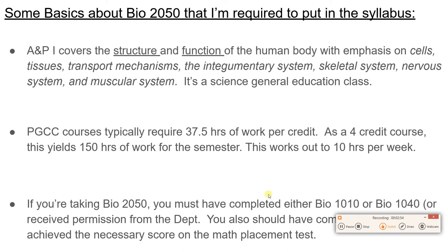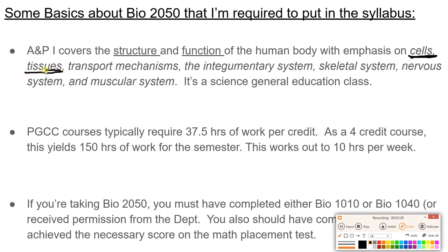There's some stuff about the class that the college makes me put in the syllabus. What we are going to do in A&P 1 is look at the structure — how things are built — as well as the function — how things work — of the human body. We're going to talk about cells, tissues, transport, the integumentary system (better known as the skin), your skeletal system, your nervous system (brain, spinal cord, and nerves), and your muscular system — about 600 muscles. Don't worry, we're not going to do all 600.